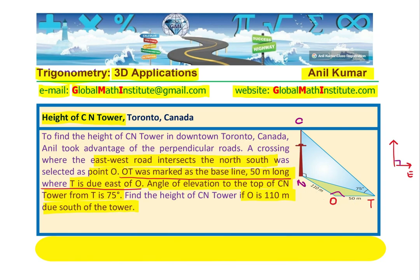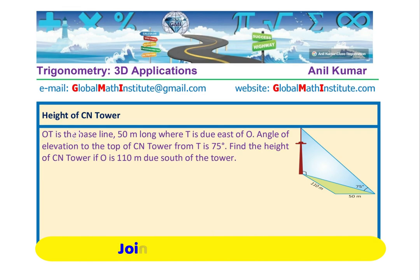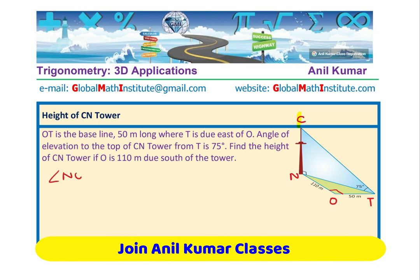I think the concept is clear. Let us look into the solution. The key information: we need to find the height of the CN Tower. O is the intersection of north-south and east-west lines. T is the point from where the angle of elevation is 75 degrees. OT is the baseline of 50 meters long, and O is 110 meters from the base of the tower. Since the roads intersect at right angles, angle NOT is 90 degrees, so triangle NOT is a right triangle.